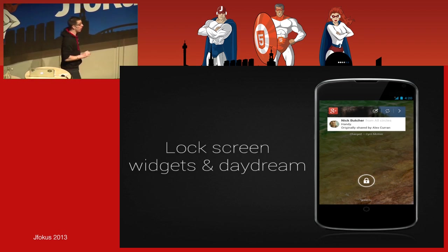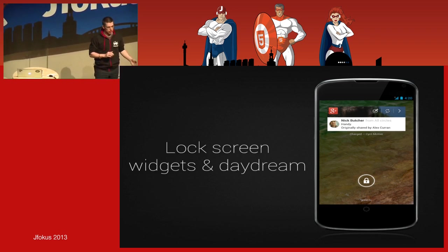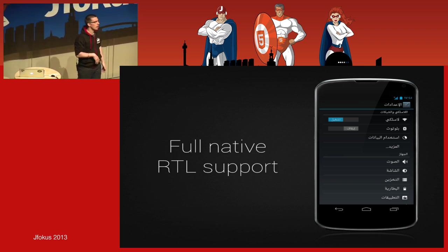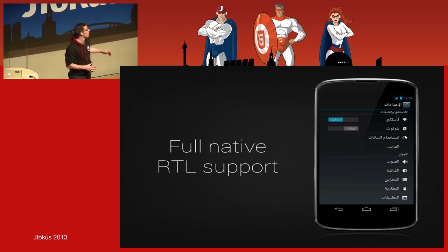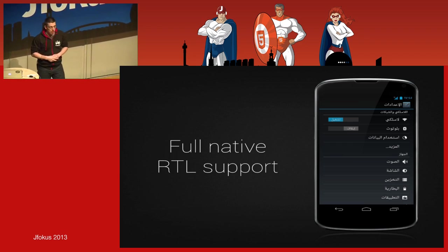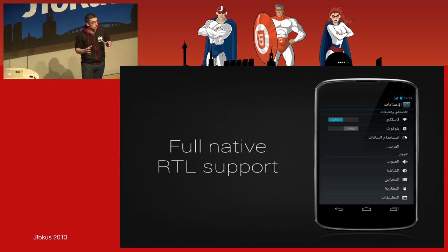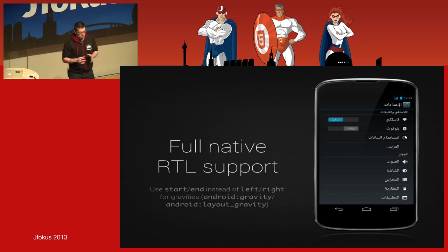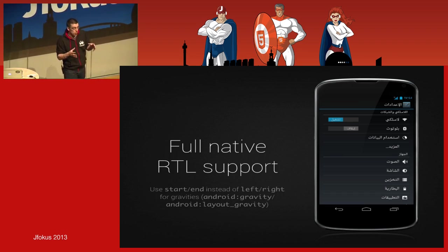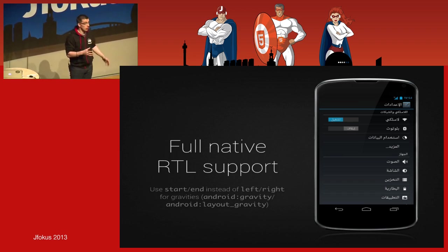Full native right-to-left language support has been added. Swedish, French, and English are written left to right, but some languages like Arabic are written right to left. Starting 4.2, there is complete native support for these languages. From a developer point of view, you just need to replace 'left' and 'right' with 'start' and 'end' when using gravity or layout gravity. In a left-to-right language, 'start' means left; in a right-to-left language, 'start' means right.